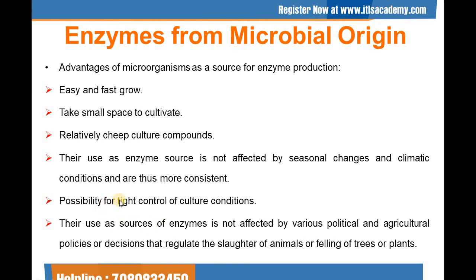It will be our benefit if we use enzymes from microbial origin. Advantages of microorganisms as a source for enzyme production: they can easily and rapidly grow, they can take small space to cultivate, and their production uses relatively cheap culture compounds. Their use as enzyme source is not affected by seasonal changes and climatic conditions and are thus more consistent. There is possibility for tight control of culture conditions to keep the culture free from contamination. Their use as a source of enzymes is also not affected by various political and agricultural policies or decisions that regulate the slaughter of animals or felling of trees or plants.